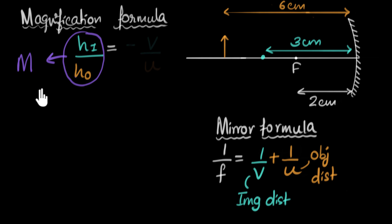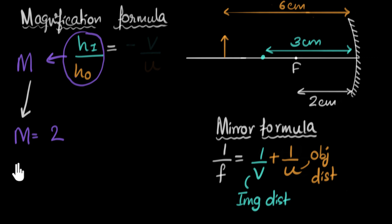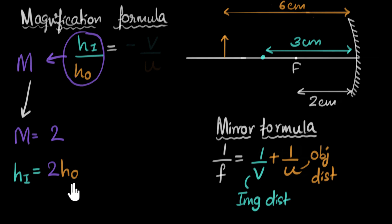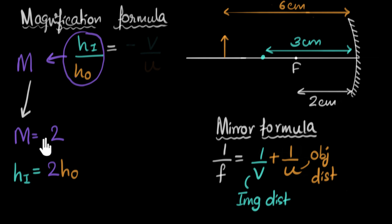Let me give you an example to make this clear. Let's say this ratio — the magnification — equals two. That means the height of the image equals two times the height of the object, so the image is twice as large as the object. The number itself tells you how magnified the image is compared to the object, and that's why this ratio is called magnification.